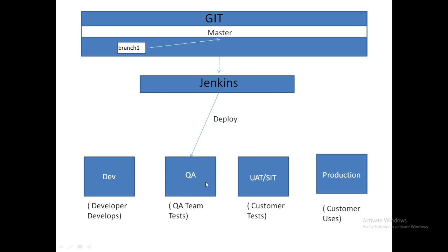Once deployment to QA is done, the QA team tests it. After that, you can use Jenkins in a similar way to deploy to UAT or even Production. However, most of the time this is where the DevOps team comes into the picture. The DevOps team will come and ask the developers which branches need to be pushed beyond QA — they get involved for UAT/SIT and Production deployments.